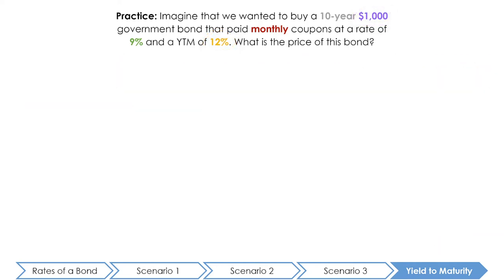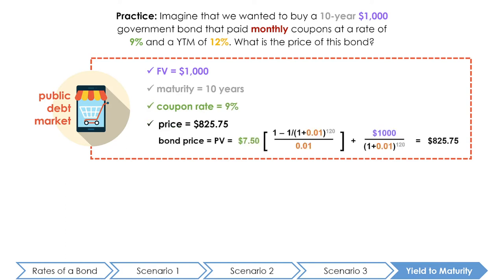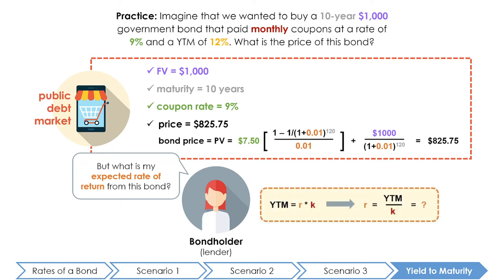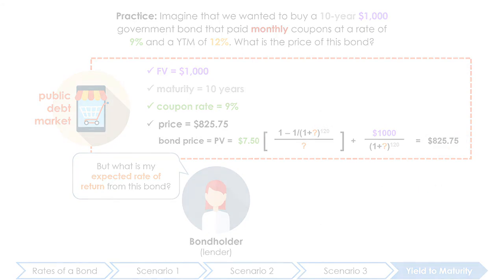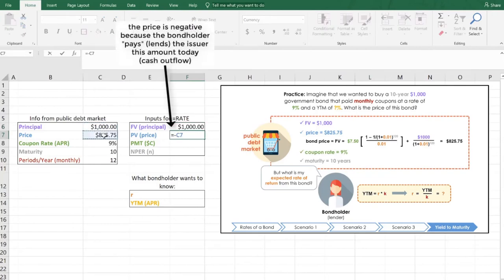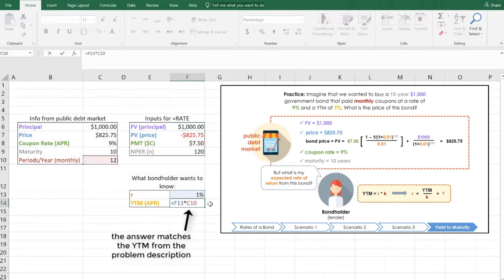In reality we may not know the yield to maturity of a bond. On the public debt market we will know the face value, maturity, coupon rate, and the price the bond is selling for. As an investor, if we want to know our expected rate of return — the effective rate used to discount the coupons — we would have to solve for R. However, as you can see from the bond valuation formula, it is extremely complex to isolate R, requiring a lot of trial and error. The good news is that there is a function built into Excel that will solve for R. Using the RATE function, we can input the face value, price, number of periods, and periodic coupon amount, and Excel will give us the effective R — in this case the effective monthly rate of 1%. From here, the yield to maturity equals R times M, which is 12%.